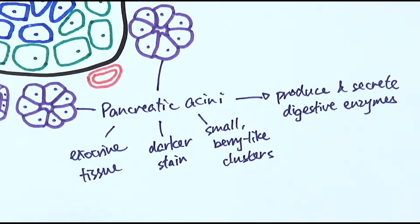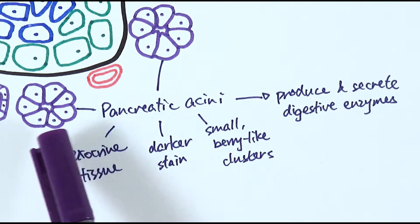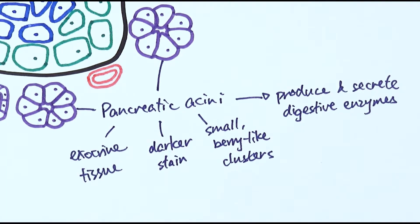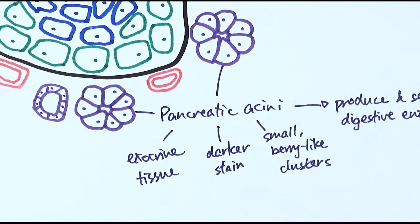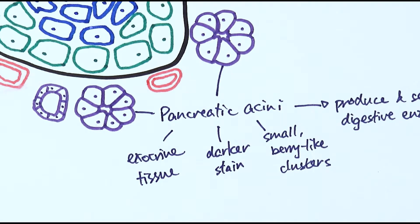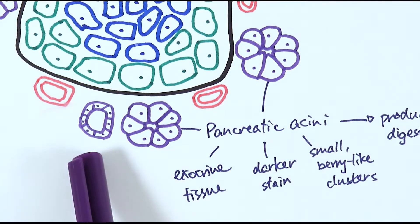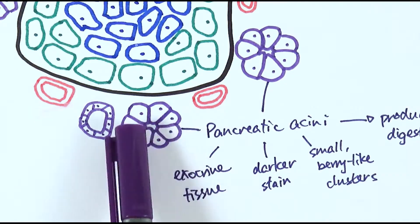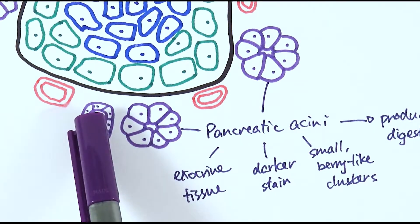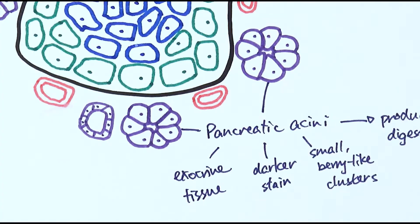For simplicity I've drawn just a couple of clusters here to show what they generally look like, but they're not always in this flower shape — they are a lot more varied, but they tend to be smaller berry-like clusters. There is also a branch of a pancreatic duct here that leads to the duodenum and into the small intestine. Any enzymes produced in these cells can go into the pancreatic duct and then be delivered to the small intestines.